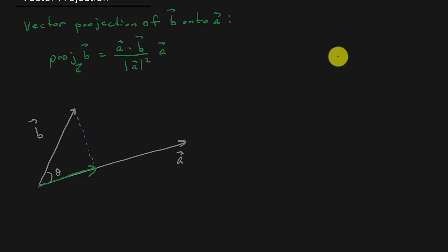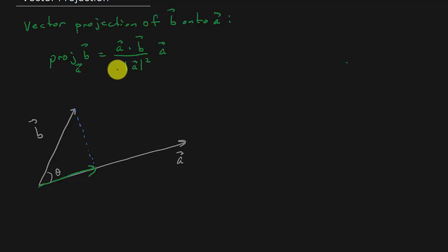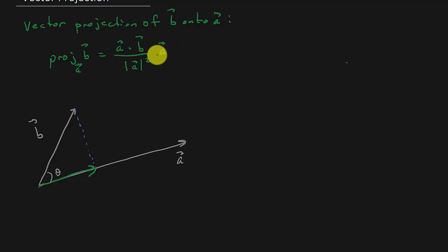If you look at this, notice this part: the dot product of A and B divided by the magnitude of A squared — this is just a number. And then you're going to take this number and multiply it times a vector. So you're going to get a vector back, and that's going to give you this vector here.